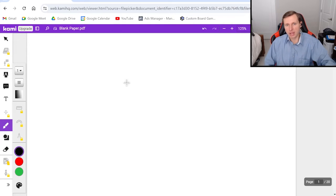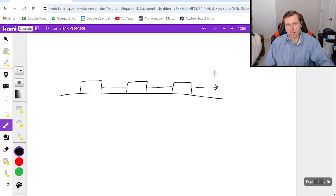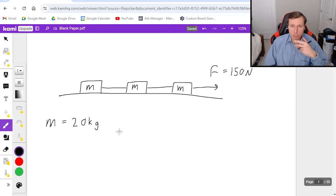Let's go ahead and look at the problem we have today. I have three boxes being pulled to the right with some force. I'll give you numbers because I'm feeling generous today. Let's say the force is 150 newtons. Each of these masses have the exact same mass. I'll say m equals 20 kilograms.